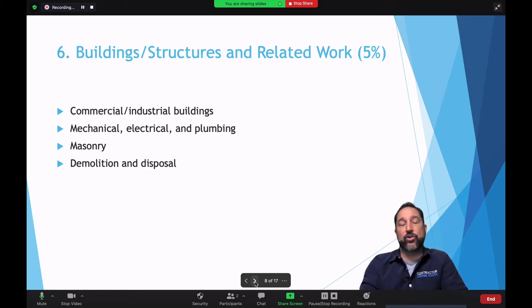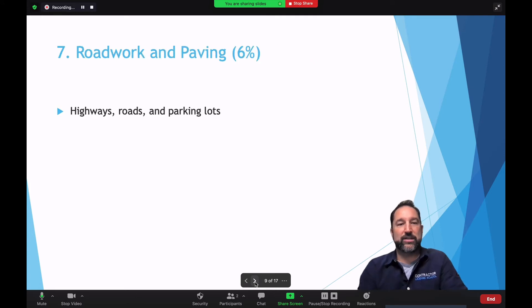Number six, you're going to need to know about building structures and related work. 5% on that. Commercial industrial buildings, mechanical, electrical and plumbing, masonry, demolition and disposal. So a lot of components there.